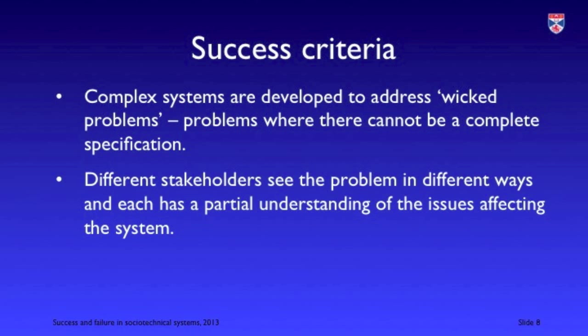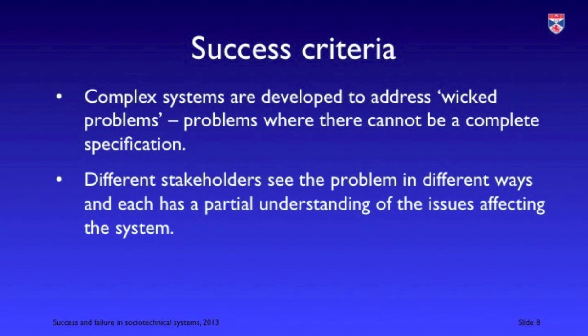Complex systems are developed to address what are sometimes called wicked problems — problems which cannot be completely specified, have fuzzy boundaries, and where different stakeholders actually see a different problem. Because different stakeholders view the problem in different ways, it's inevitable that they judge whether or not the system is effective depending on their own view of the problem.